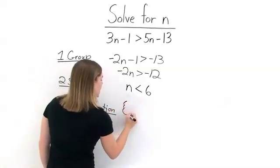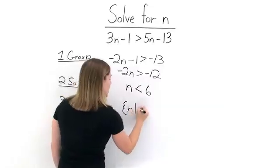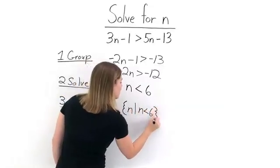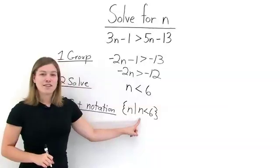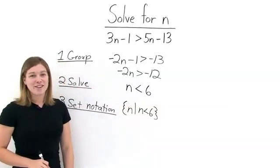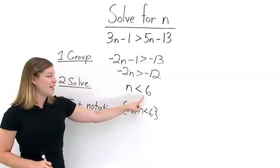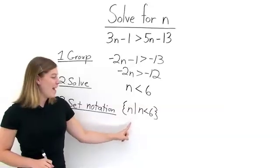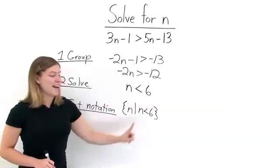We open up our set and write N such that N is less than 6. We close our set, and we have our answer. N is less than 6, and in set builder notation, N such that N is less than 6.